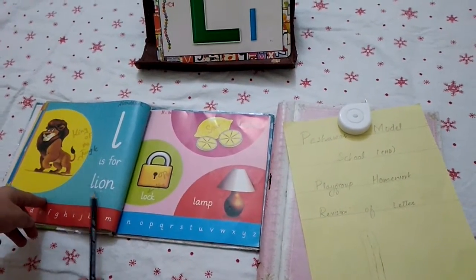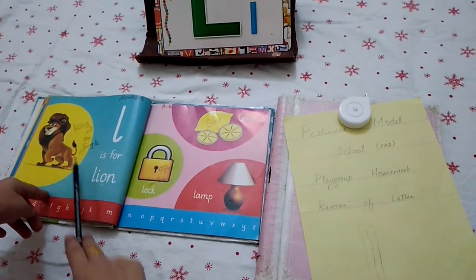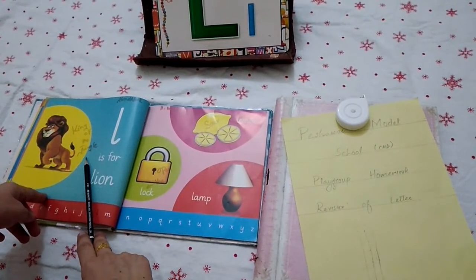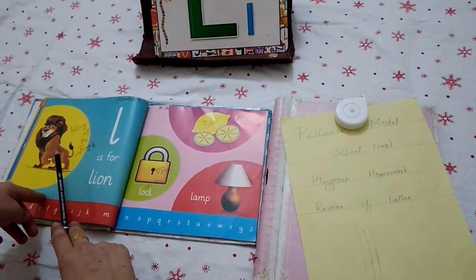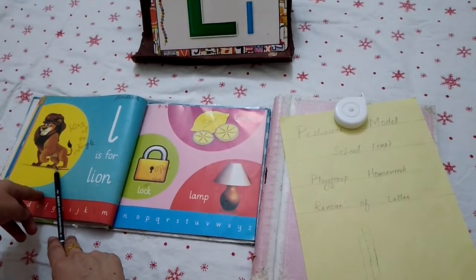And what is this? The lion, which is the king of the jungle. Very nice. And which is a very angry animal.